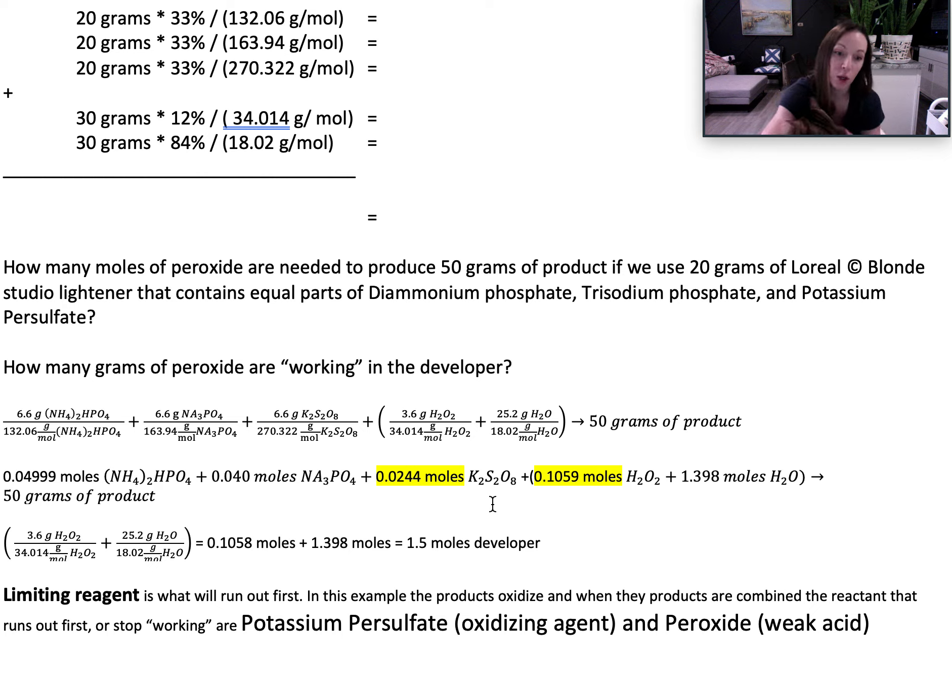This is why when peroxide is mixed with your lightener and dries up, it stops working. That's what gives hair color its ability to keep lifting until the product has dried up.